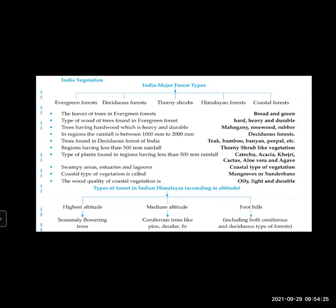In swampy areas, estuaries, and lagoons, coastal type of vegetation is found. Coastal type of vegetation is called mangroves or Sundarbans. The wood quality of coastal region trees is oily, light, and durable.